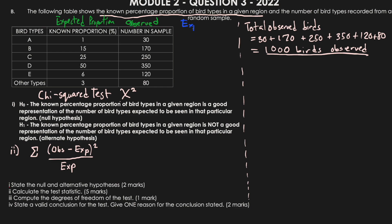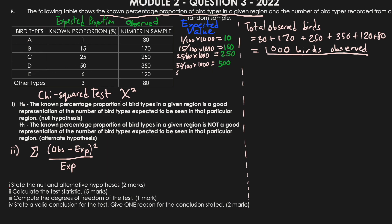We can now calculate the expected value for each bird type. For bird type A: 1% of 1000 = 10. For B: 15% of 1000 = 150. For C: 25% of 1000 = 250. For D: 50% of 1000 = 500. For E: 6% of 1000 = 60. For F: 3% of 1000 = 30. Adding these expected values gives us 1000, confirming our calculations are correct.